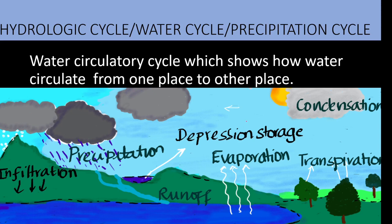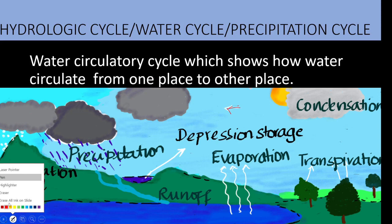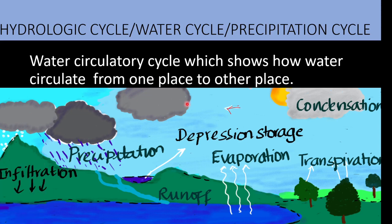These clouds are carried away by wind motion and in suitable places these particles grow in size and finally pour down to the earth in the form of precipitation. Precipitation can be in the form of rain, snow, hail, etc.